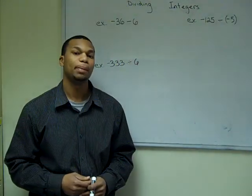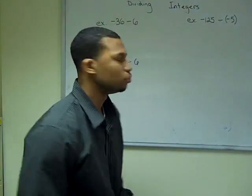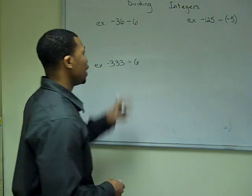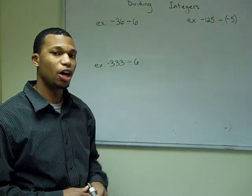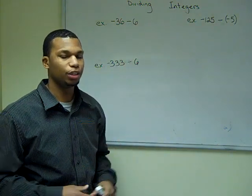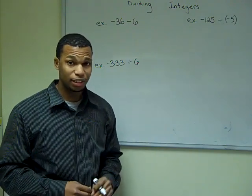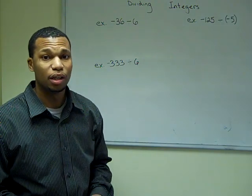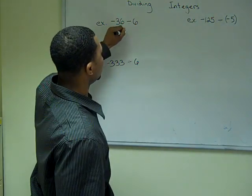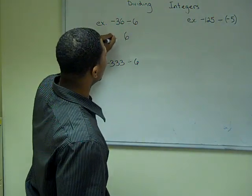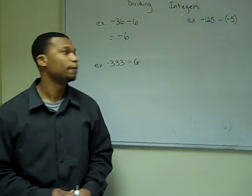Now let's do some examples using division. We have a negative number divided by a positive number. Since our signs are different, our answer is going to be negative. We blindly divide 36 divided by 6 and we end up getting 6. Since our signs are different, our answer is negative 6.